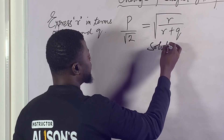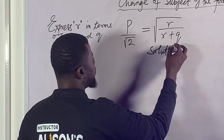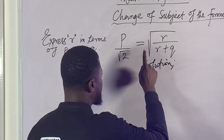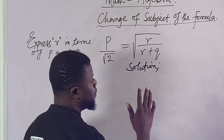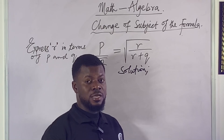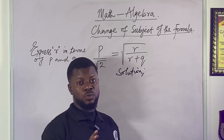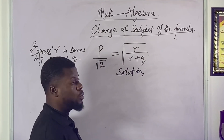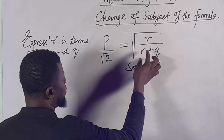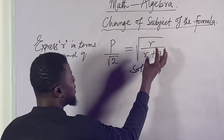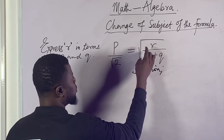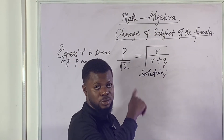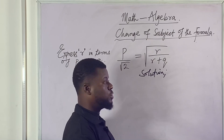Let's see the solution to this problem. What we need to do firstly — because of this square root in this change of subject of formula — we don't have a specific rule to follow, but there are some starting guides we need to know. Because this arrow we are looking for is inside the square root, we need to remove this square root.